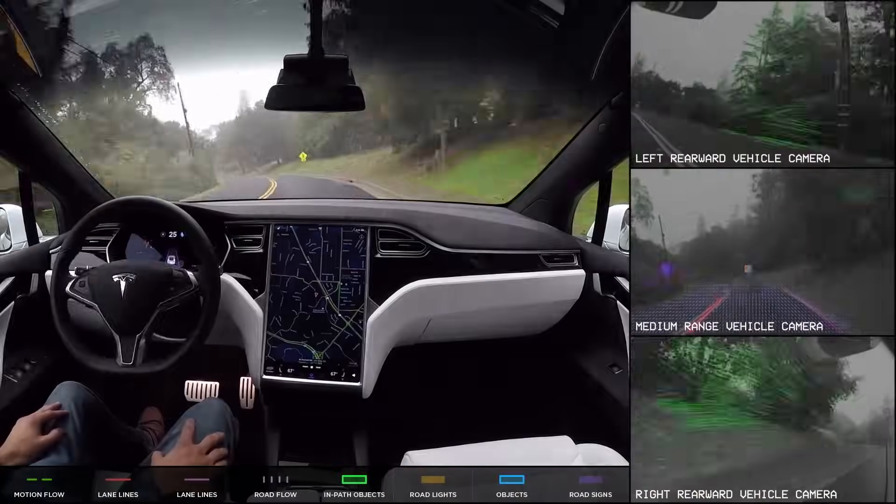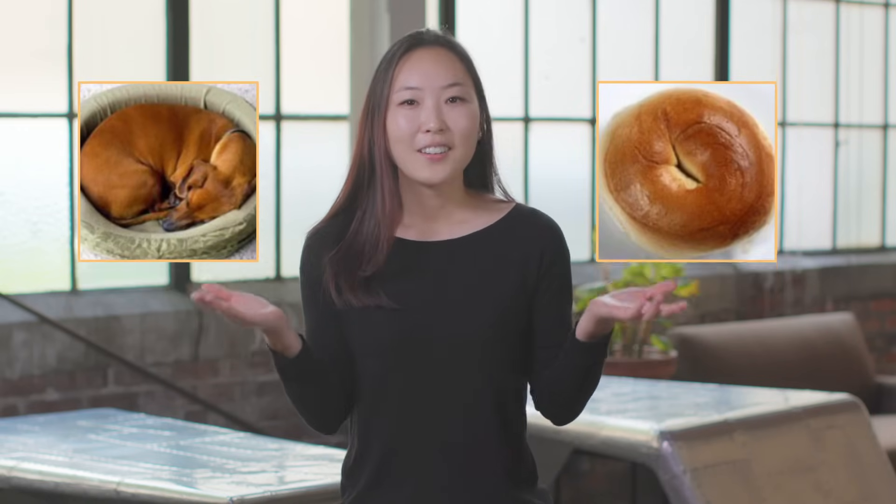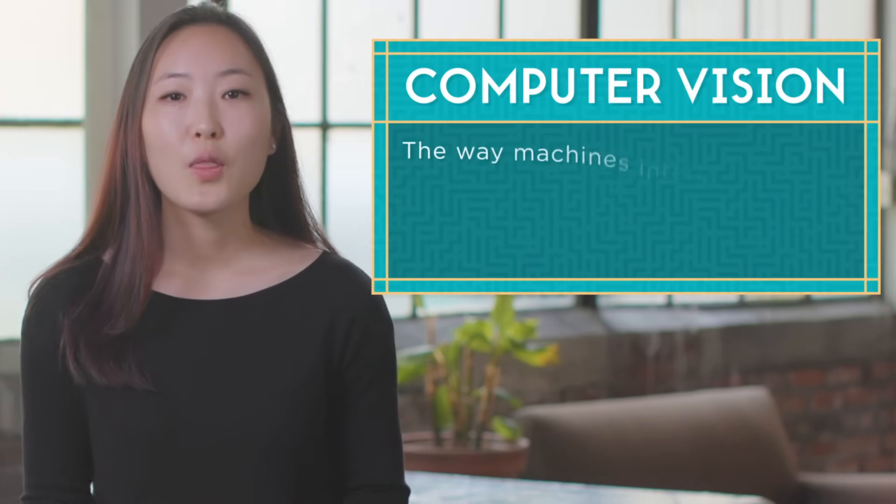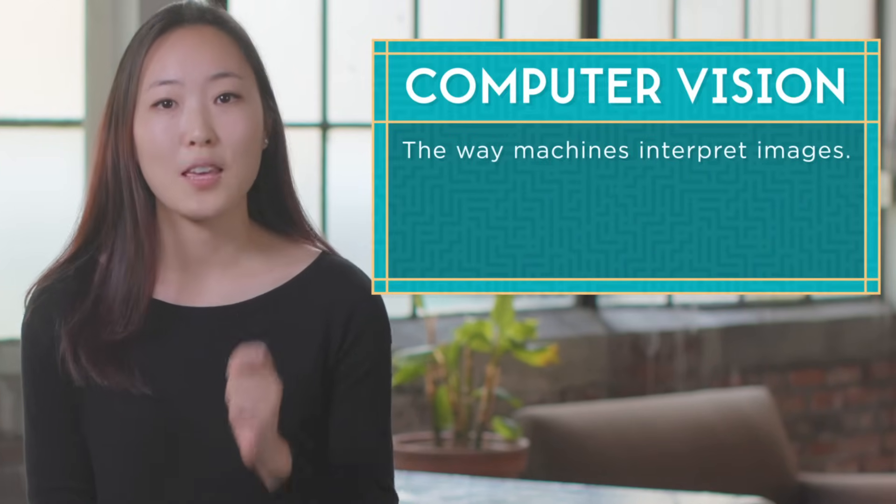Have you ever wondered how a computer can recognize a face or drive a car? Or maybe you've wondered why it's so hard for a computer to tell the difference between a dog and a bagel? Well, it all has to do with something called computer vision, the way machines interpret images.